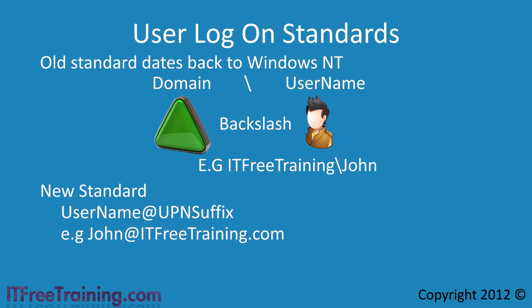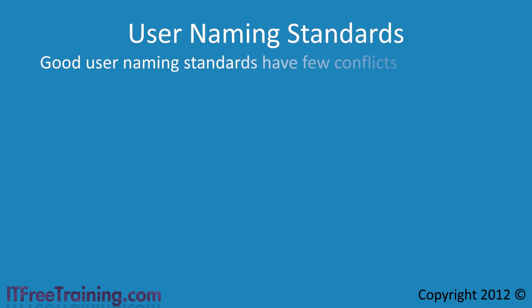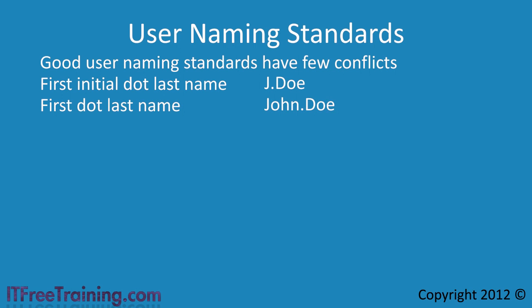Active Directory supports any principal name mapped to any user. Regardless of which system you use, you will need to work out a system of naming that minimizes the number of naming conflicts. An example is first initial dot last name. Some companies will even go for longer names like first name dot last name. The longer the login name, the less likely you will have two users with the same login. For example, if Jane and John Doe both worked for the same company, two of the naming standards here would generate the same login name — in that case an administrator would need to change one of the logins. A lot of administrators will simply add a number to the end of one of the logins to make them different.